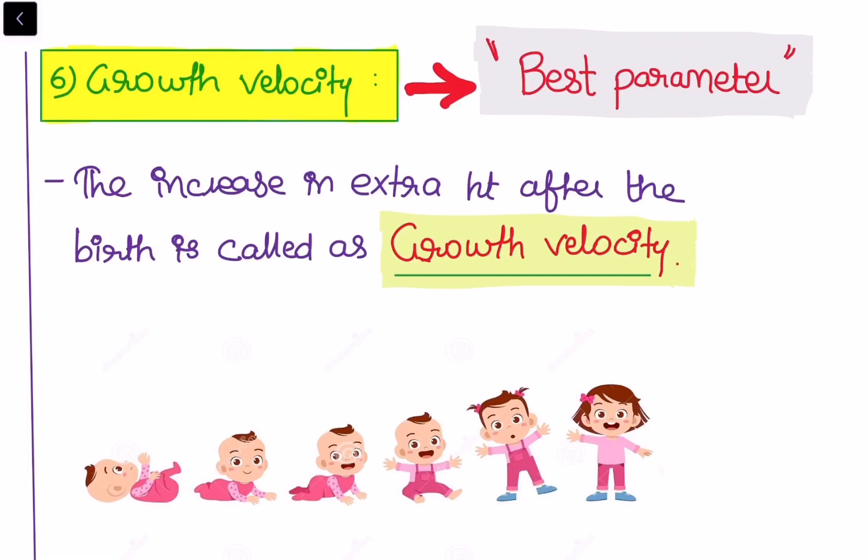The last parameter is growth velocity — the increase in extra height after birth. The important thing to remember is that it is the best parameter. Recall that weight was called the most sensitive parameter, while growth velocity is called the best parameter.